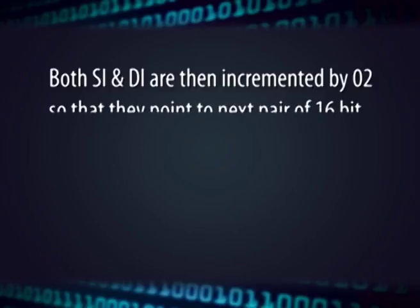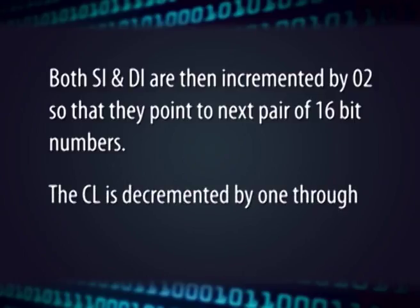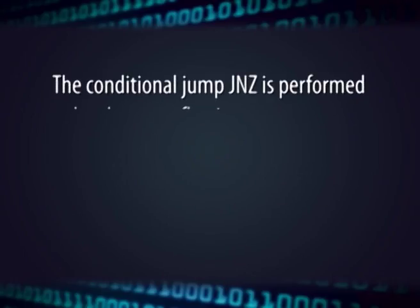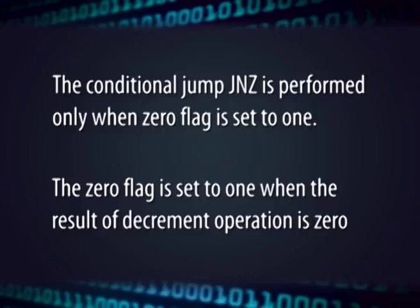Both SI and DI are then incremented by 02, so that they point to the next pair of 16-bit numbers. The counter CL is decremented by 1 through the DEC CL instruction. The conditional jump JNZ is performed only when the zero flag is set to 1, and the zero flag is set to 1 when the result of the decrement operation is 0. The program can be easily extended for 128-bit addition by storing 8 sets of 16-bit numbers instead of 4, and the loop will iterate 8 times — meaning register CL must be initialized to 8 instead of 4.